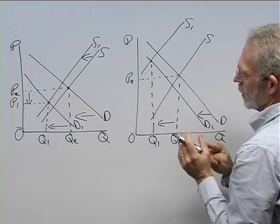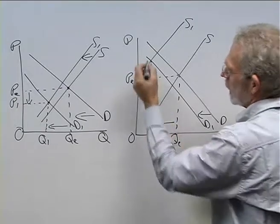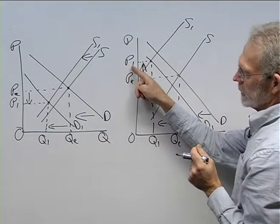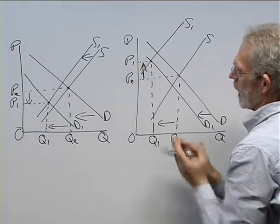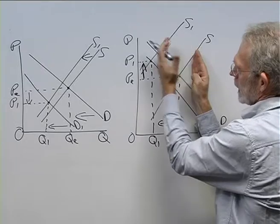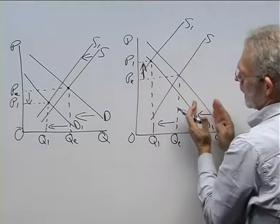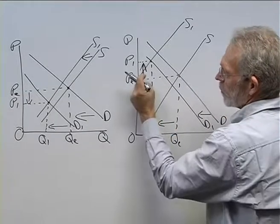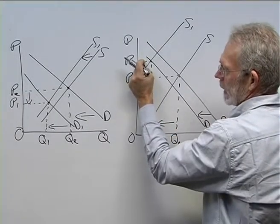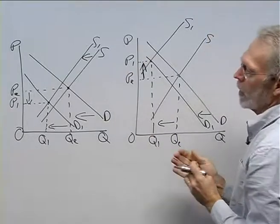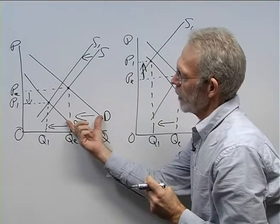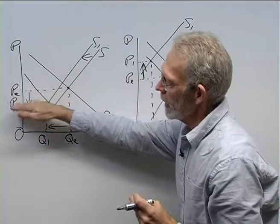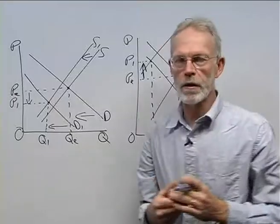And the effect on equilibrium price? Well, equilibrium price increase to P1. So we see, if the decrease in supply is bigger than the decrease in demand, equilibrium quantity decreases, but the price increases. If the decrease in demand is bigger than the decrease in supply, we have a decrease in equilibrium price.